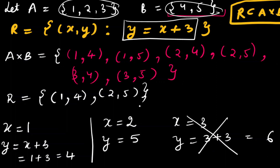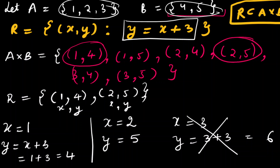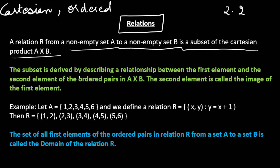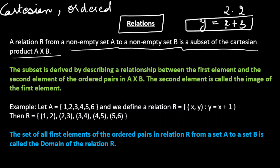So we only consider two ordered pairs: (1, 4) and (2, 5). Both (1,4) and (2,5) are there in the Cartesian product A × B, which means this relation is indeed a subset of A × B. The subset is derived by describing a relationship between the first and second element — here y = x + 3 is that relationship. The second element is called the image of the first element.